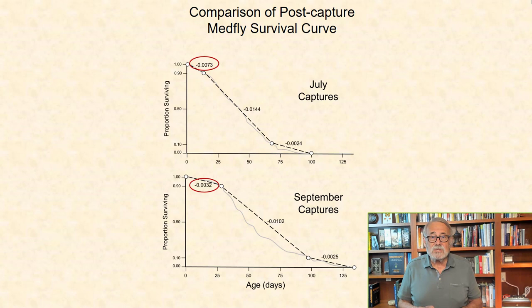Horizontalization, the rate of decline for this component of the survival curves, was over two-fold greater in the July captures relative to those captured in August. Whereas the first 10% of deaths occurred after two weeks for the July MedFly cohorts, it occurred after around a month for the September captures, i.e. twice as long.